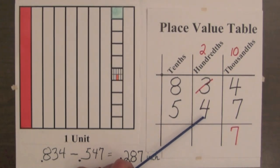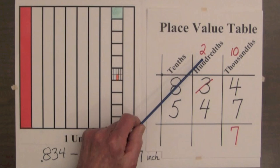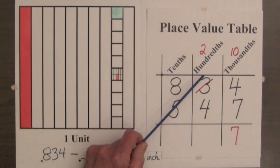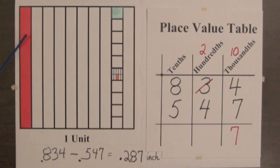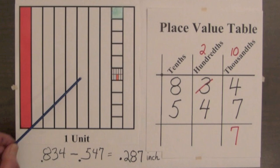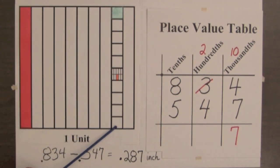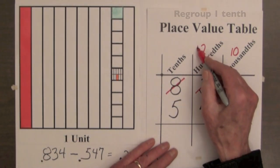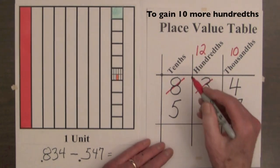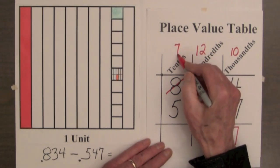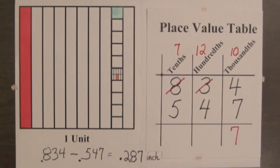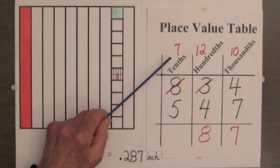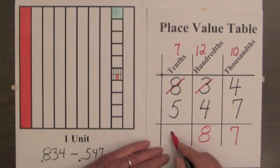Next, we need to subtract 4 hundredths, but we only have 2 hundredths, so we need more hundredths. And we know that 1 tenth is equal to 10 hundredths. So we'll regroup 1 tenth to obtain 10 more hundredths. And that leaves us with 7 tenths in the tenths column. Now 12 hundredths minus 4 hundredths is 8 hundredths. And 7 tenths minus 5 tenths is 2 tenths.